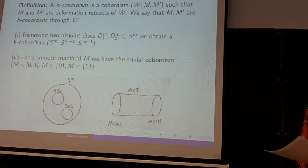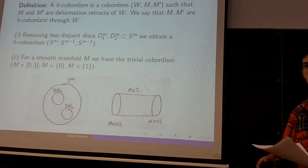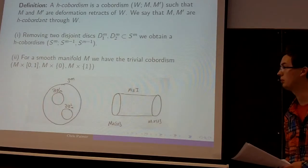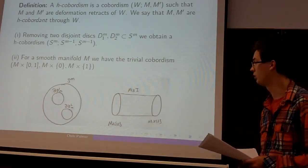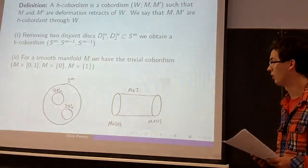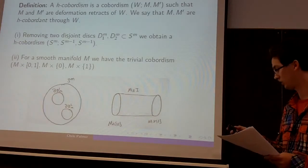So here we have two examples. We can take two small N-discs inside of the M-dimensional sphere and remove them. This creates two new boundary components, two M-minus-one spheres, and this gives a H-cobordism. And we also have this trivial cobordism, so we can take the Cartesian product of M with a closed interval [0, 1], and again it has two boundary components, which are just M.